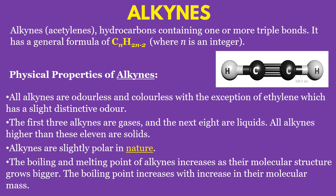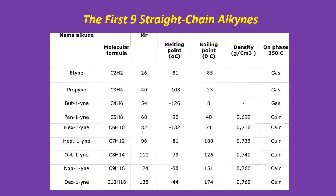The properties of alkynes pretty much follow the same pattern as those of alkanes and alkenes. Alkynes are unsaturated carbons that share a triple bond at the carbon site. This table shows the specific values of physical properties of the first nine straight chain alkynes.